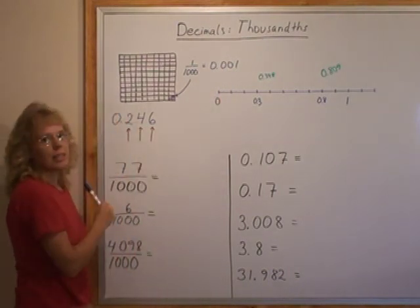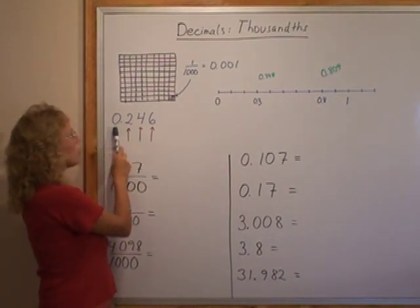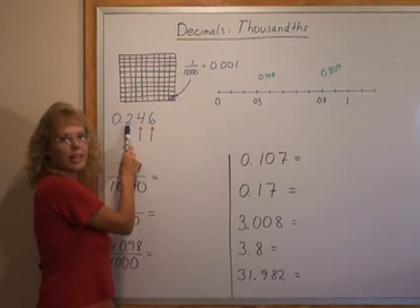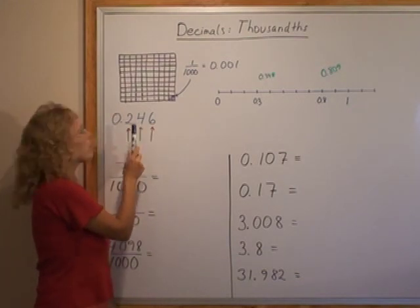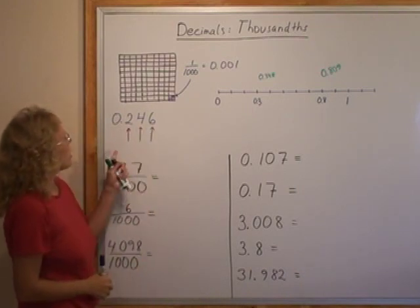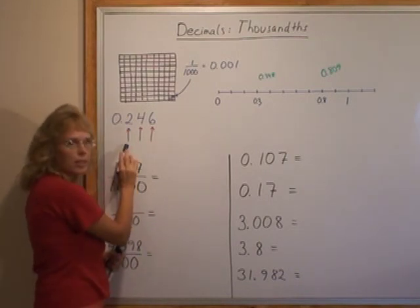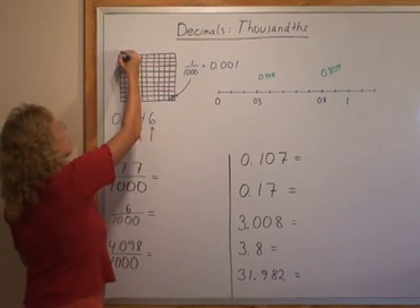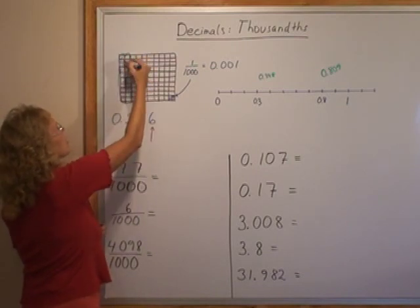Here's another number that has some thousandth parts. It has zero ones and this is the tenths place, so we have two tenths, four hundredths, and six thousandths, and I'm going to illustrate and color it in here. First I have two tenths, which a tenth would be all of this would be one tenth and another tenth here, so all of this gets colored.